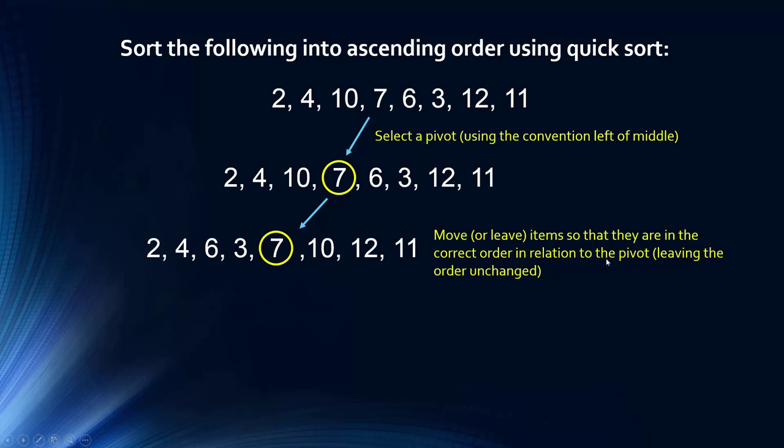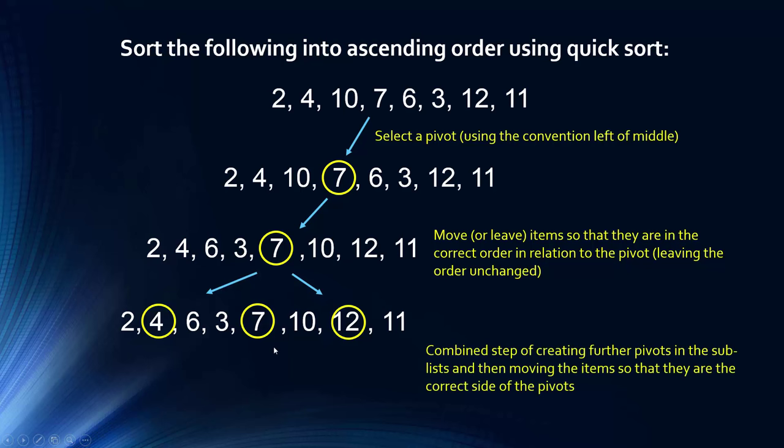Hopefully you can see what is being done there. It's kind of difficult to explain. I've really condensed this. Usually you have to do loads of steps to do this. But then you choose your next pivot. So left of center here, center here. And then we do the same process. So two is fine, but three needs to be moved in front of four. Six is okay. Ten is okay. And then eleven needs to be moved in front of twelve.